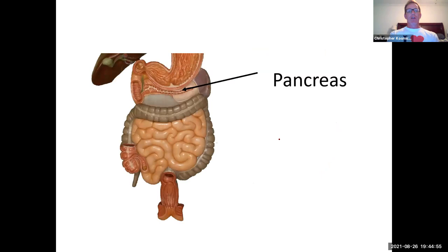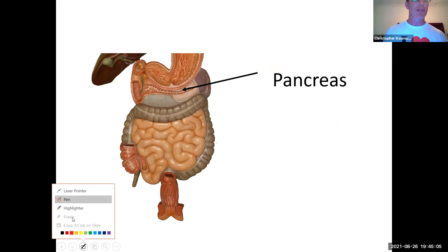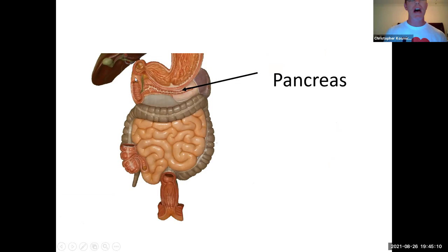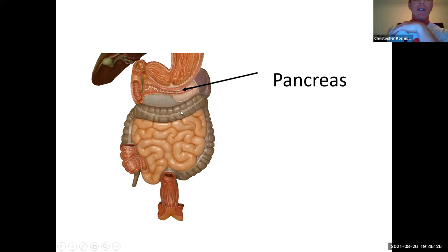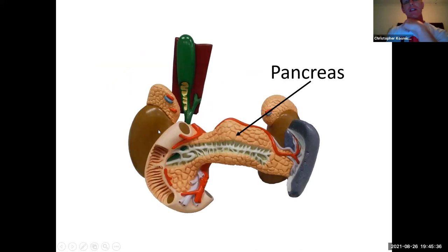On this model, the structure being labeled is the pancreas. A couple of things to point out regarding the position of the pancreas: it sits between the duodenum and the spleen, it's inferior to the stomach, and also superior to the transverse colon — the part of the large intestine that goes from left to right. You can see here in more detail: here's the duodenum, the small intestine, and the pancreas is right over here. Both kidneys sit right behind the pancreas.